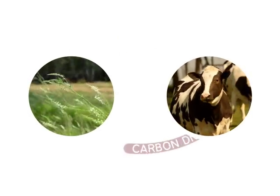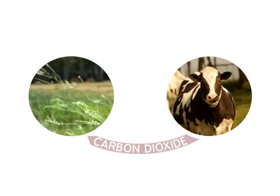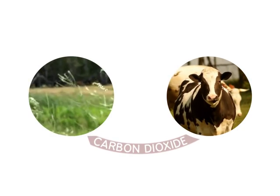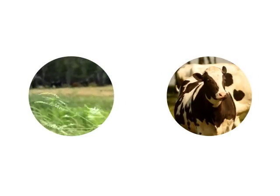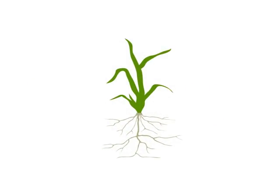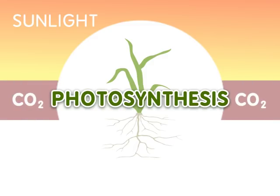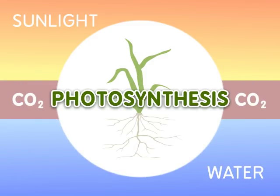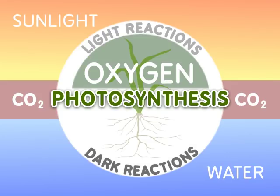The carbon dioxide that animals produce during aerobic respiration can then be used by plants during photosynthesis to make more sugars. In photosynthesis, sunlight, carbon dioxide, and water are used by plants in the light and dark reactions to make oxygen and sugars.